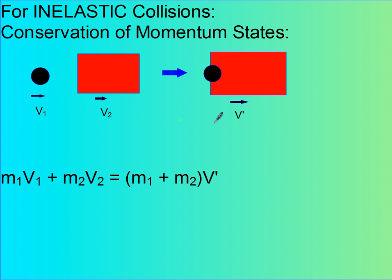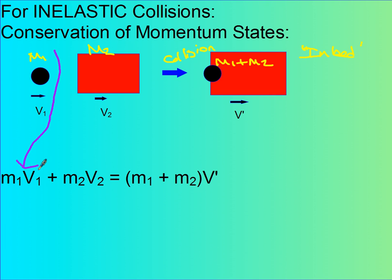This is a typical diagram for an inelastic collision. We have M1 traveling at V1, M2 traveling at V2, and then we have the collision. And then they're stuck together — they're embedded. A lot of times you'll see the word embedded. But basically this is now M1 plus M2. For conservation of momentum, M1 times V1 is our first momentum, plus M2 times V2. Our arrow is our equal sign. And finally, our final momentum is going to be this combined mass times the final velocity.